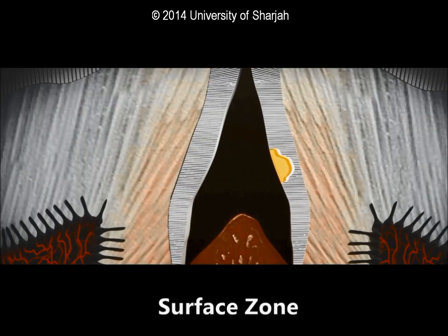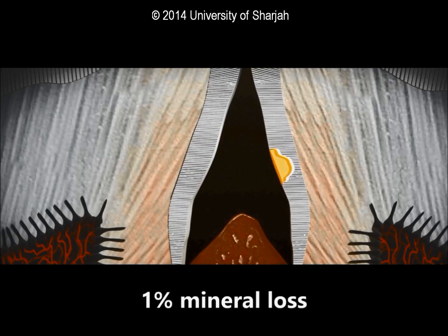The surface zone represents one of the most important changes in enamel caries in terms of prevention and management of the disease. It has approximately one percent mineral loss, with a zone of remineralization resulting from the diffusion barrier and mineral content of plaque.